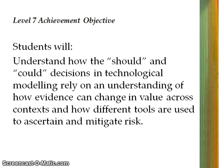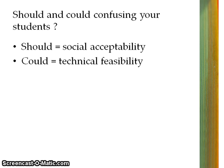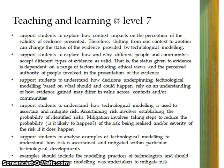Level seven is about should and could decisions around technological modelling and how evidence changes across contexts. If you find that should and could confuses your students, try substituting should with social acceptability and could with technical feasibility — it may help them grapple with that in terms of functional modelling. The teaching and learning section of the indicators of progression outlines what you do to support and guide your students. Most of the teaching is about supporting students to understand valid evidence, how it's been used to ascertain and mitigate risk, and getting students to analyse some examples — really choosing examples where students can see modelling that was undertaken to manage risk factors.